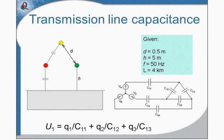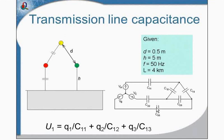Let's move to a more complicated example. Here you can see a three-phase transmission line. There are three conductors A, B, and C, placed above the earth surface, and I need to calculate the capacitance in this case. In a complex system with multiple conductors, there are several capacitances: self-capacitances of each conductor and mutual capacitances between conductors.